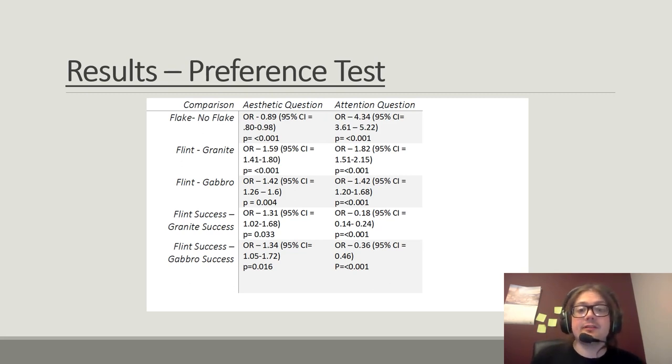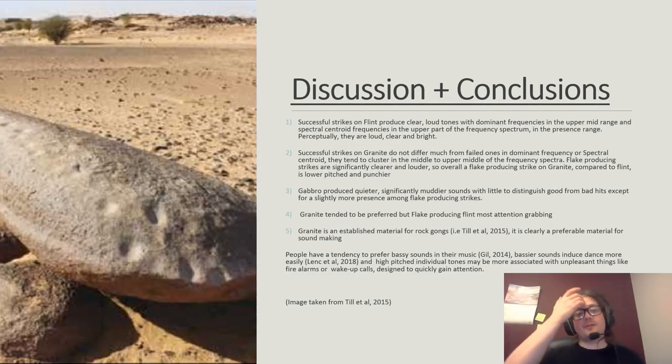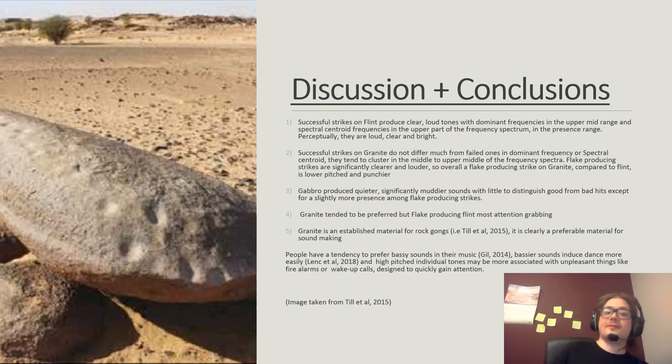Now we have gone over the results of these two experiments. We can bring it together to form some ideas about how the lithic soundscape was perceived. From these two experiments we learned that: 1. Successful strikes on flint produce clear tones with dominant frequencies in the upper mid-range and spectral centroid frequencies in the upper part of the frequency spectrum in the presence range. 2. Successful strikes on granite do not differ much from failed ones in dominant frequency or spectral centroid. They tend to cluster in the middle to upper middle of the frequency spectrum. Flake-producing strikes are significantly clearer and louder, so overall a flake-producing strike on granite compared to flint is lower-pitched and punchier. 3. Gabbro produced quieter, significantly muddier sound, with little to distinguish good from bad hits, except for slightly more presence among flake-producing strikes.